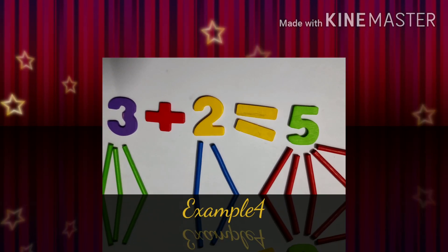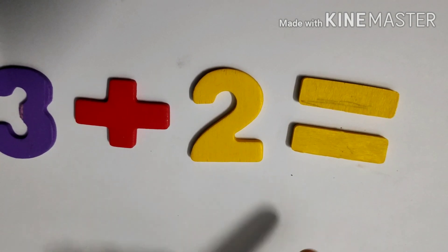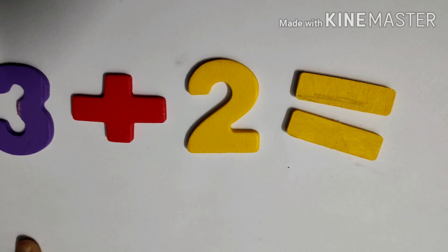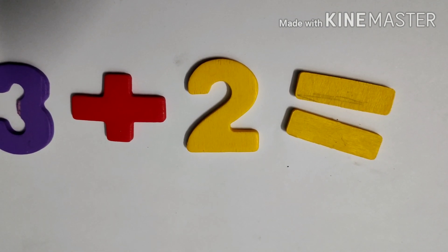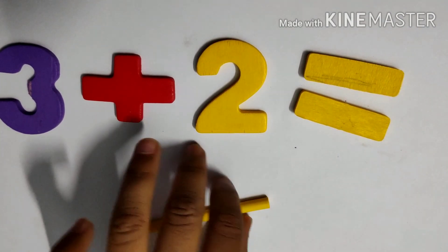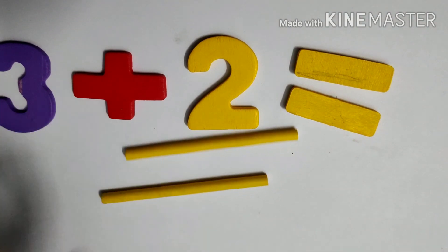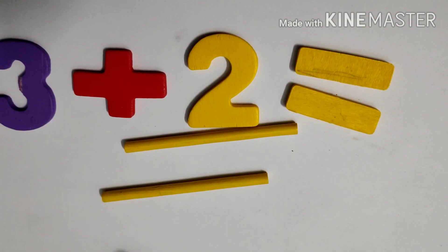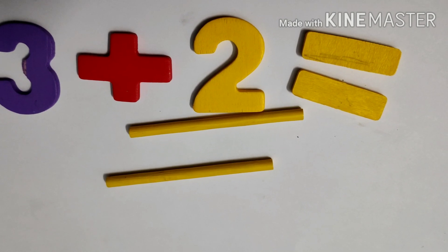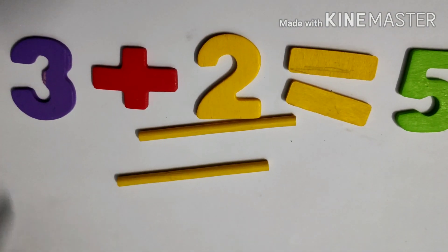Three plus two equals to five. Activity time. Three plus two equals to? One, two. After three: four, five. Five. Five. Five.